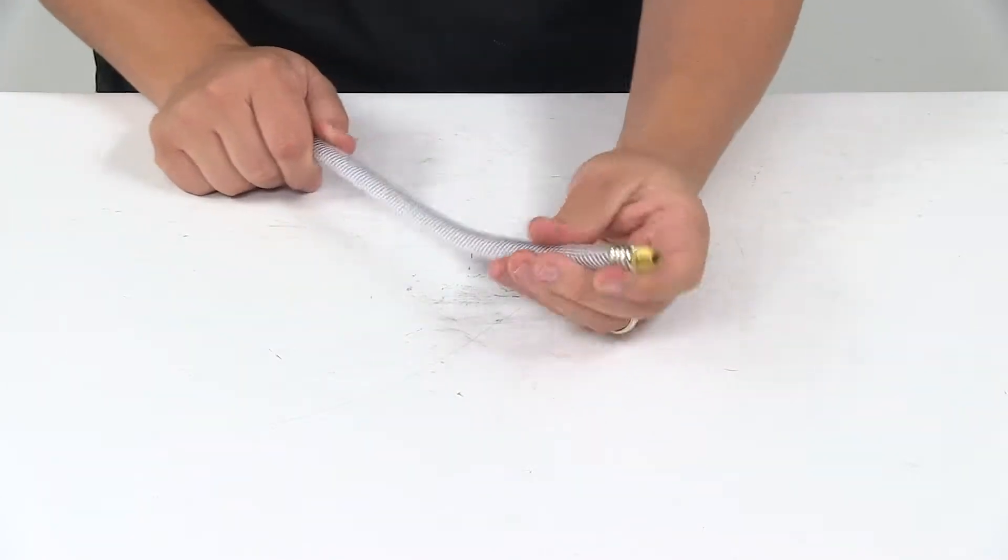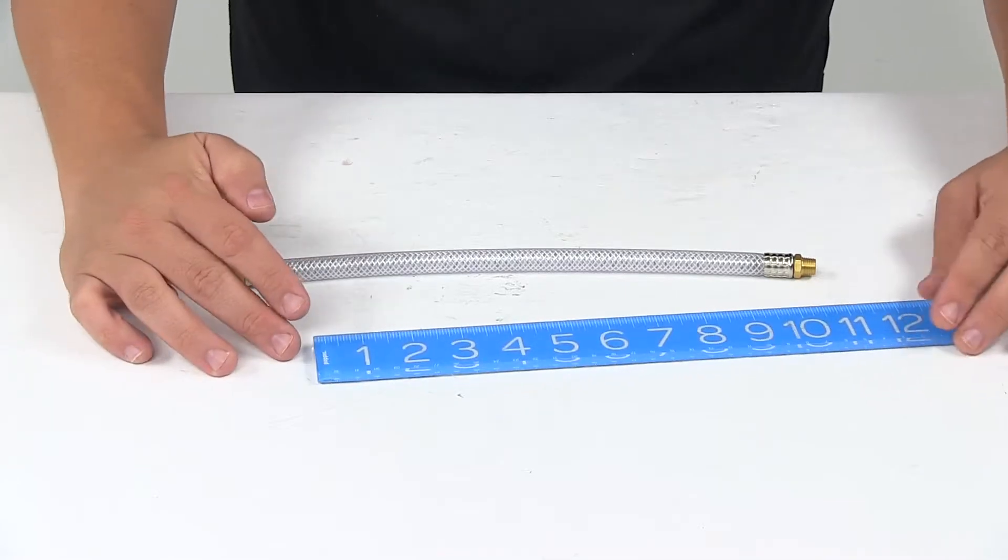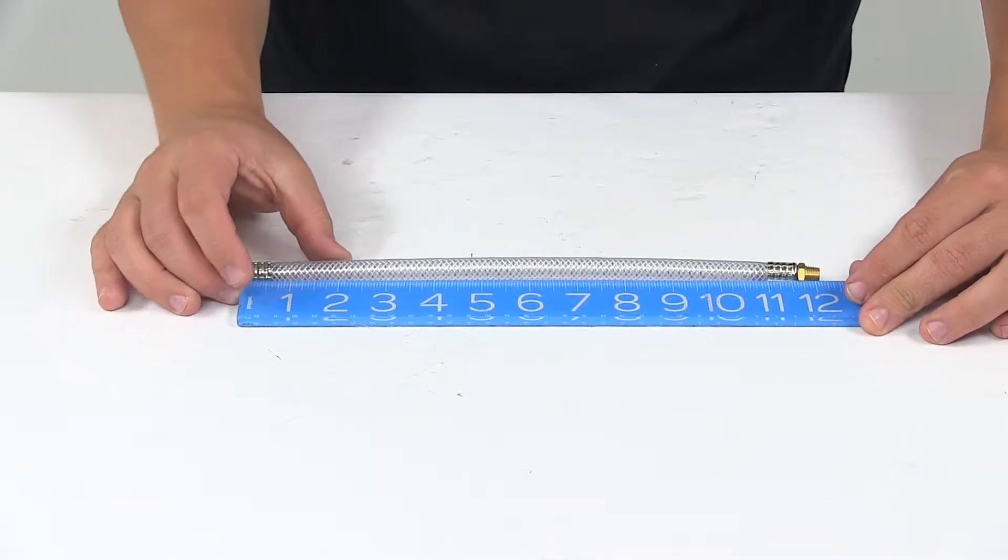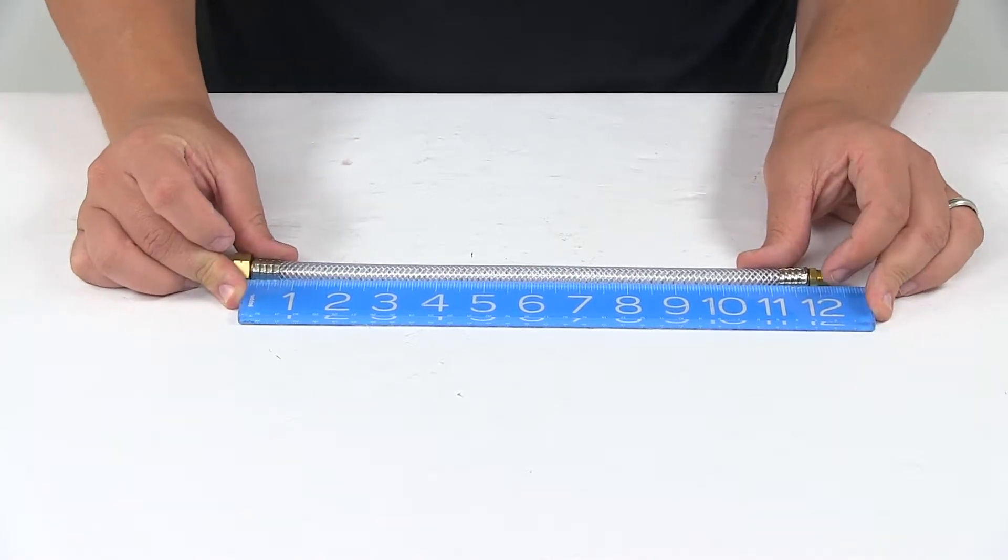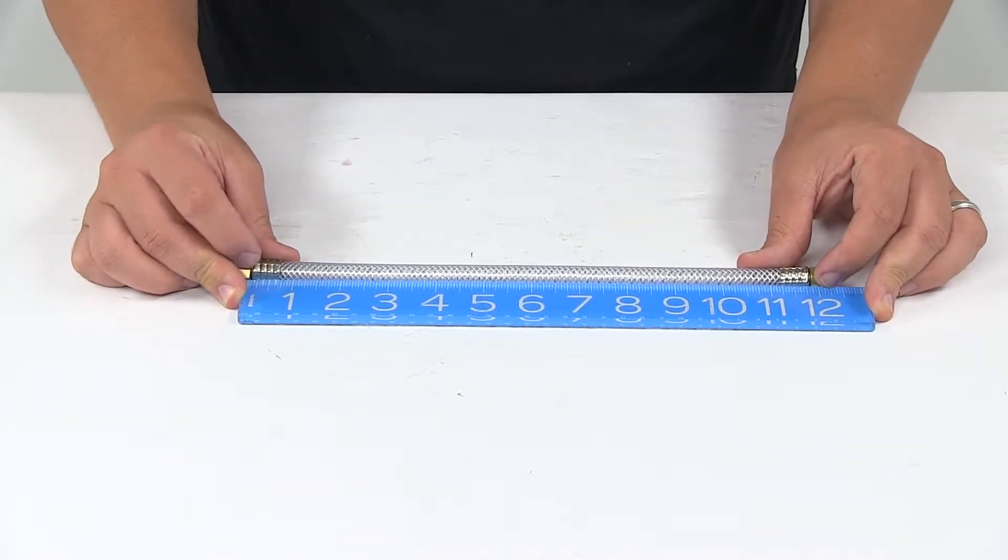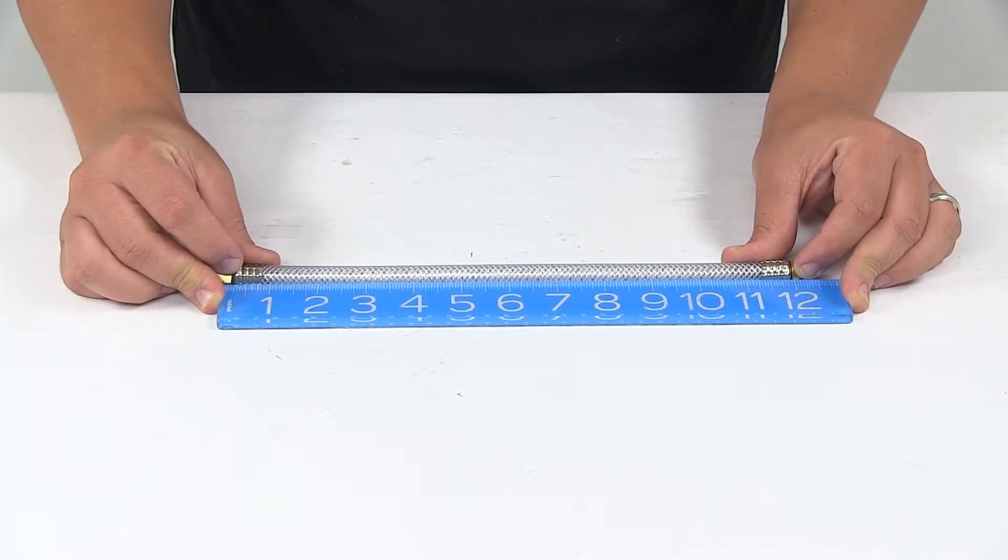This is a 12 inch reinforced hose, so if we take a measurement of the unit we can see that from connector—let me straighten it out a little bit—pretty much from base to base is about 12 inches long, so that's where we get that 12 inch measurement from.